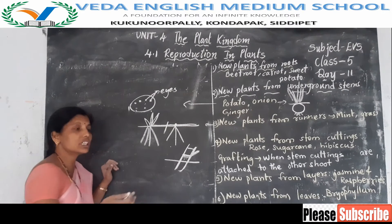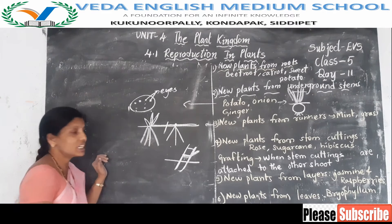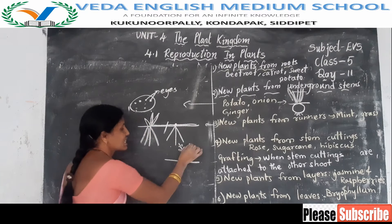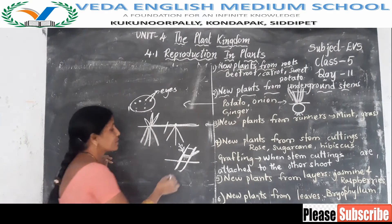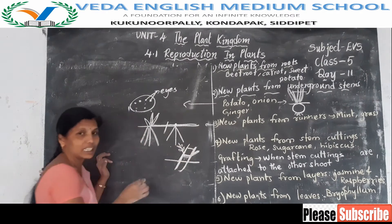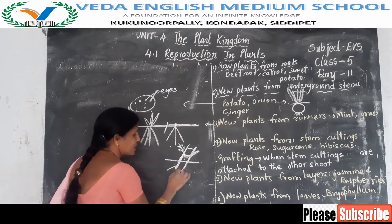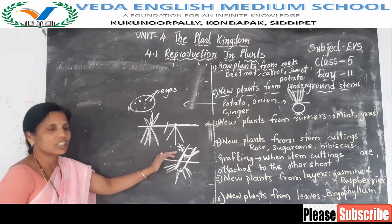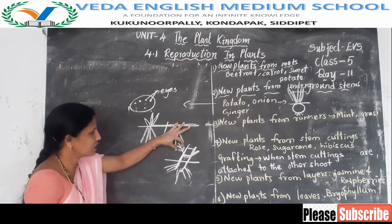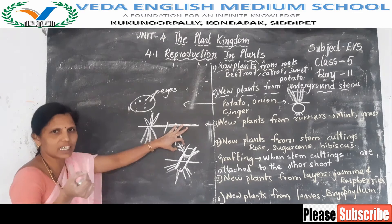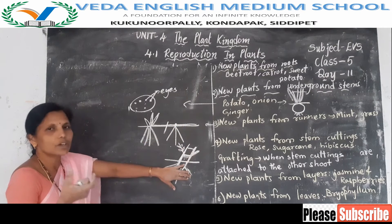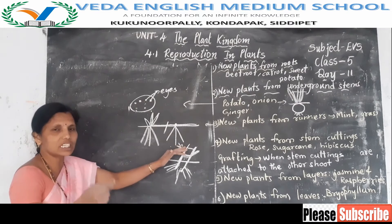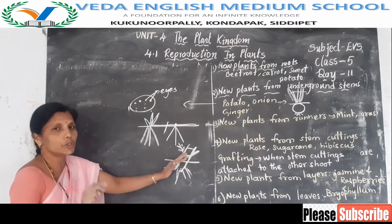How can we know that roots have developed from the stem cutting inside the soil? If we see the rising of new leaves from the stem cutting, then we can understand that roots have developed in the soil — that means it is alive. If the stem cutting is dried, it will not grow as a new baby plant.